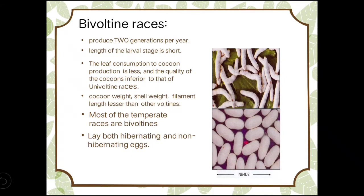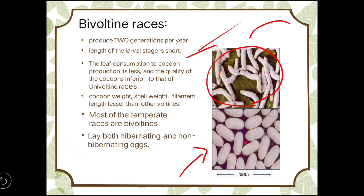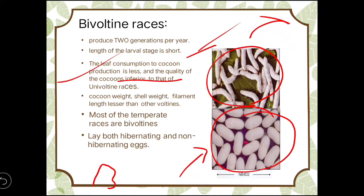Bivoltine silkworms produce two generations per year. The larval period is short. The leaf-to-cocoon ratio is less favorable — they consume more leaf but produce less cocoon. The quality, cocoon weight, and shell weight are all inferior compared to other voltine types. Most temperate races are bivoltine and lay both hibernating and non-hibernating eggs.